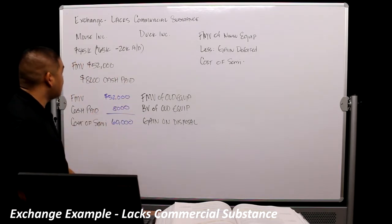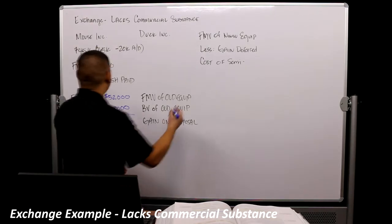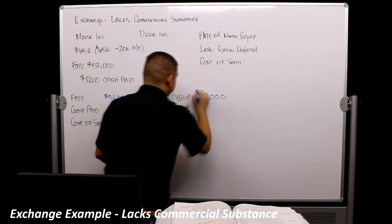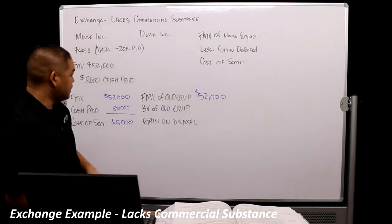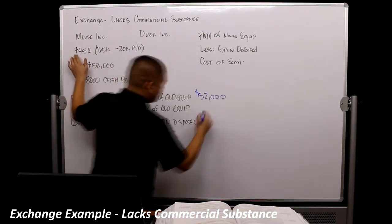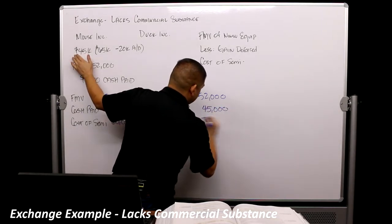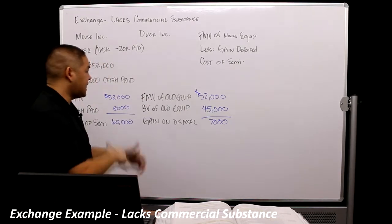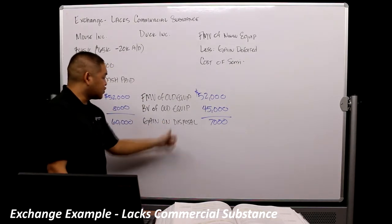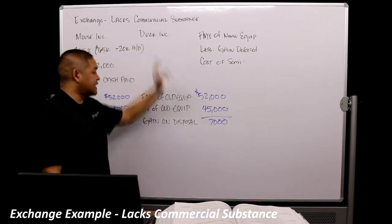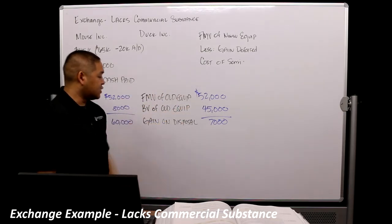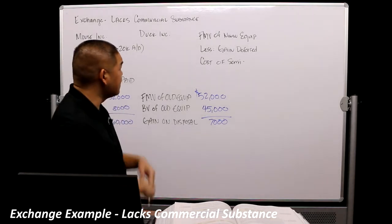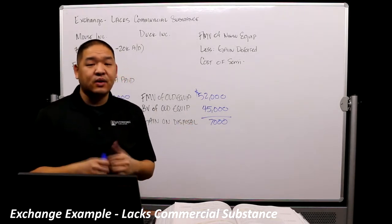The fair market value of the old equipment is $52,000 — that's how much we could get for it. The book value of the old equipment was $45,000, which means we have a gain of $7,000. Theoretically, I gave up a piece of equipment worth $52,000 to the duck, and my book value was $45,000, so the gain on disposal is $7,000.